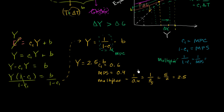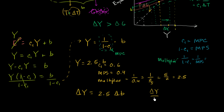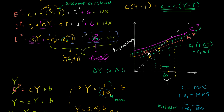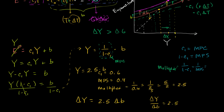We can write: the change in Y equals 2.5 times the change in B. Or, thinking of Y as a function of B, the slope is 2.5, so the change in Y over the change in B equals 2.5. This isn't magical voodoo — it's what we looked at visually with the Keynesian cross, and it's the same multiplier effect we derived in previous videos.